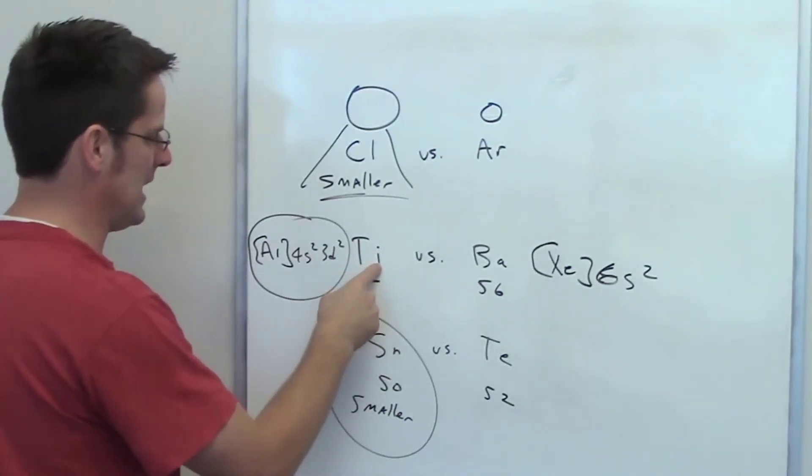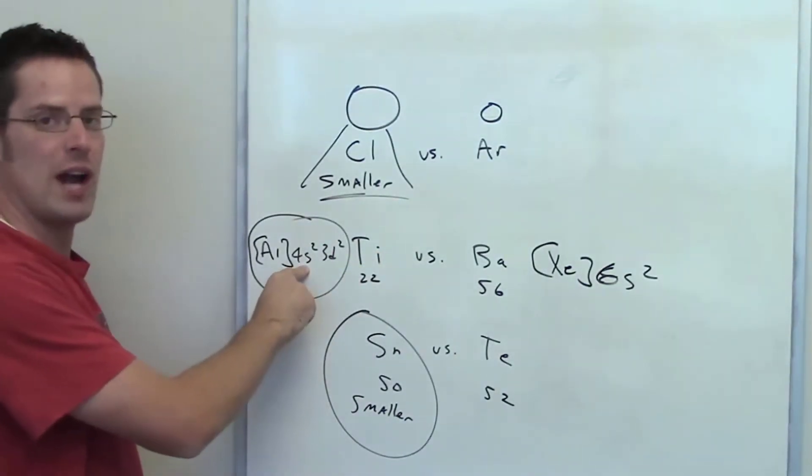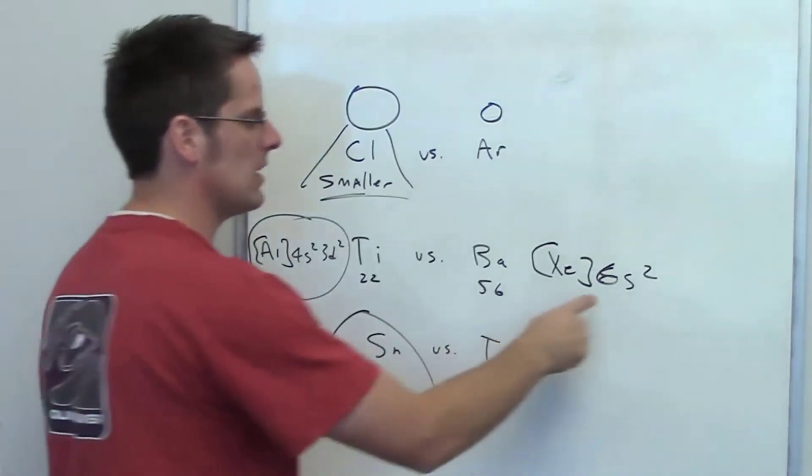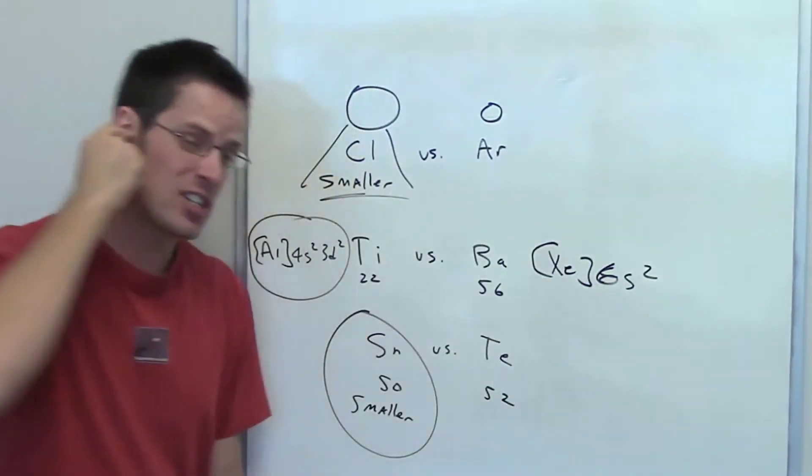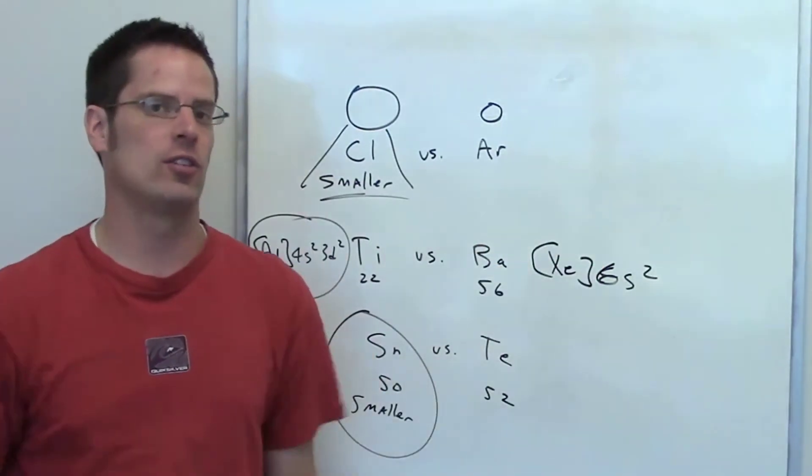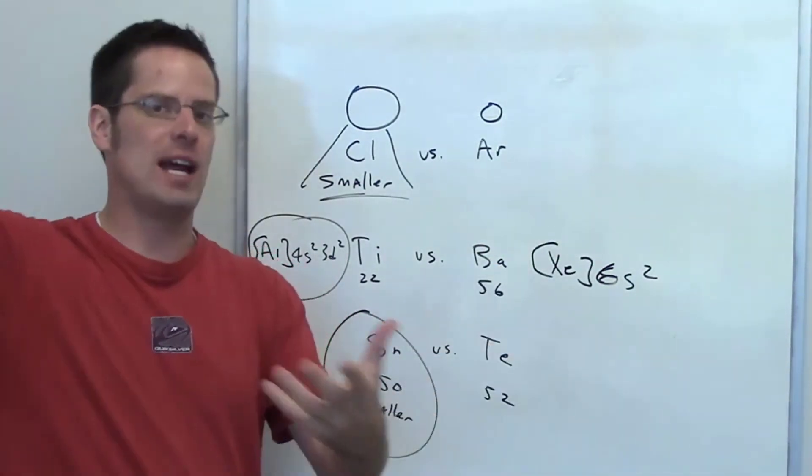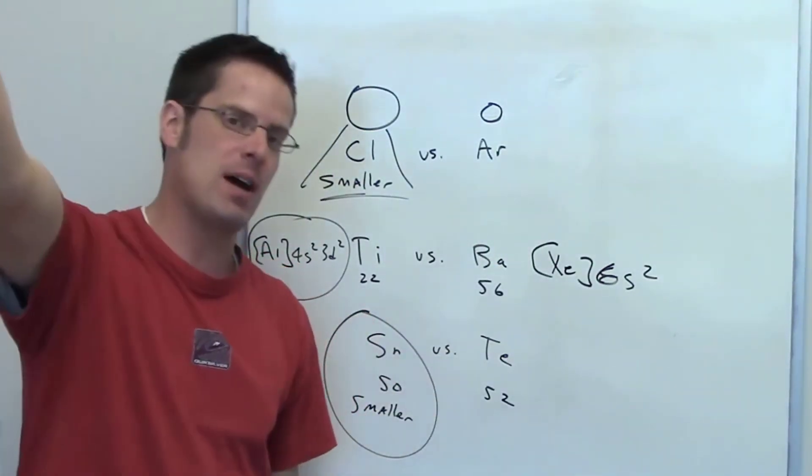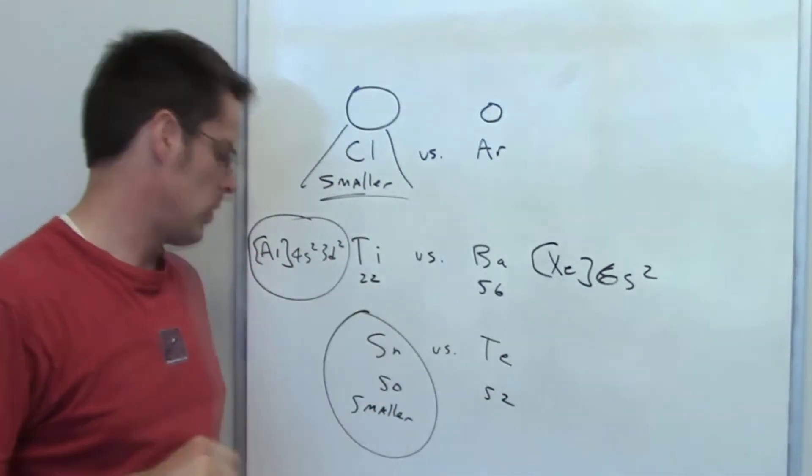Taking an electron from titanium, you're taking an electron from a 4s orbital. Taking an electron from barium, you're taking it from a 6s orbital. The 6s is way larger than a 4s. Way easier to remove an electron, like cutting a toenail from 50 miles away, out of a 6s orbital than a 4s orbital.